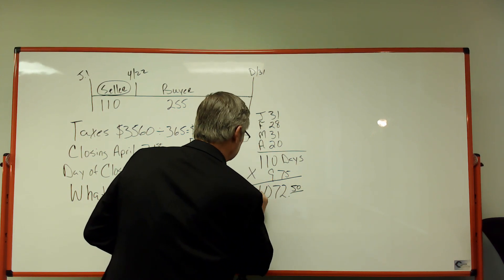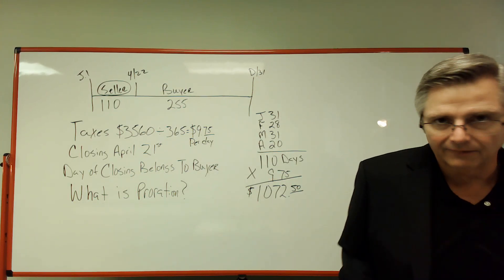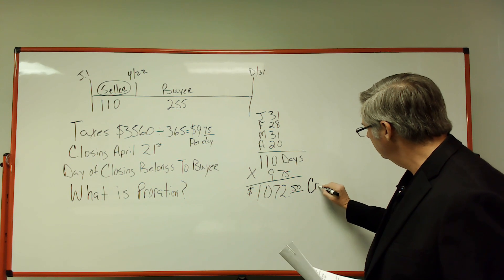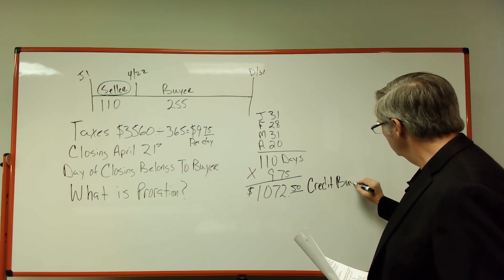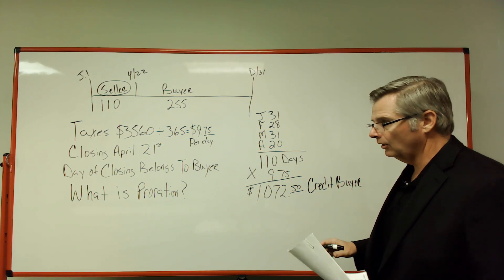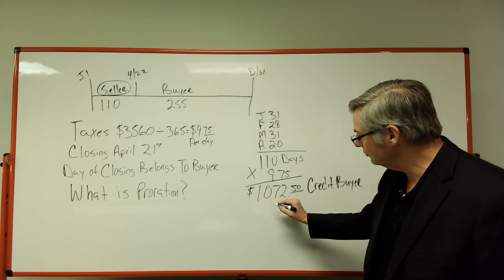So that is our proration and that is going to be, I'll come over here, and that's going to be a credit to the buyer. And on the closing disclosure it's going to be called a debit to the seller. It's going to be the same number.